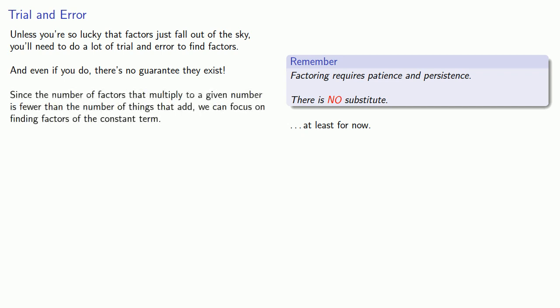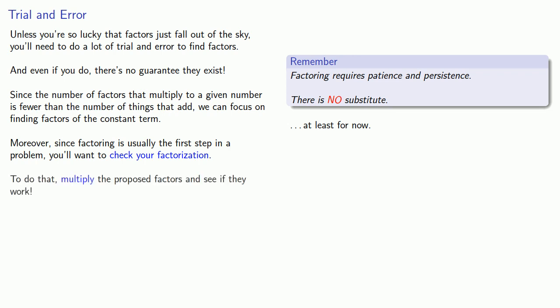Since the number of factors that multiply to a given number is fewer than the number of things that add to the given number, we can focus on finding factors of the constant term. Moreover, since factoring is usually the first step in a problem, you'll want to check your factorization. To do that, multiply the proposed factors and see if they work.